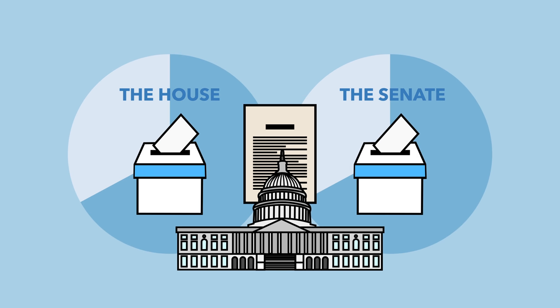To give you an idea, there have been 2,580 vetoes in the country's history, and only 111 have been overridden. If the President doesn't sign the bill and doesn't veto it within 10 days, the bill becomes law — but if, and only if, Congress is still in session.